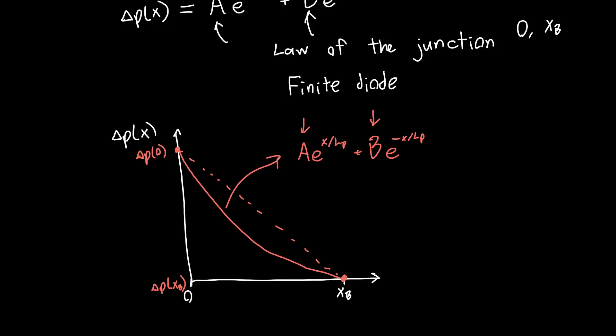So what does this tell us? Well, we know that the hole current, which is ultimately what we're interested in, how many holes are getting across the device at any given point, that's just equal to minus Q times DP times the derivative of P with respect to x. But here, since we can just replace this with delta P, since P is just delta P plus a constant.